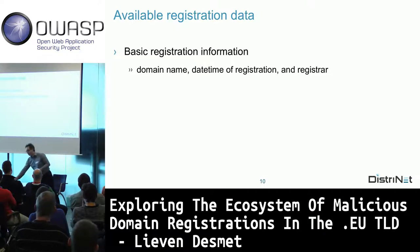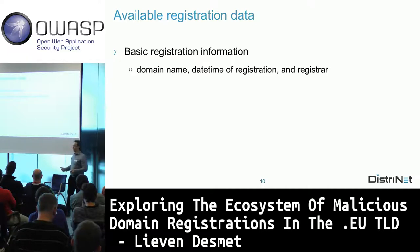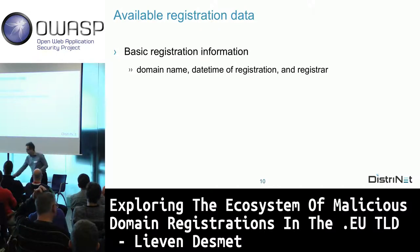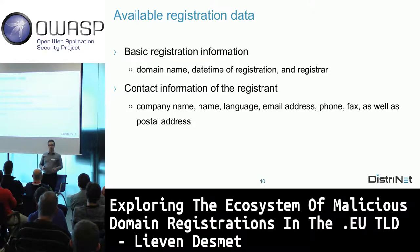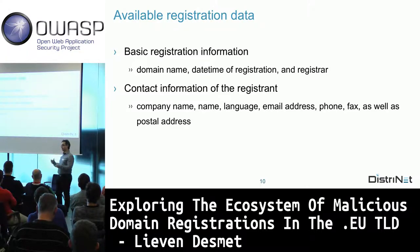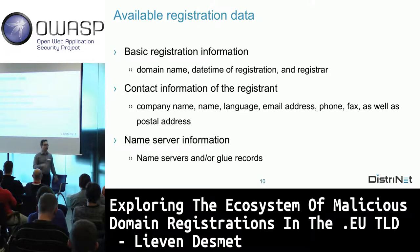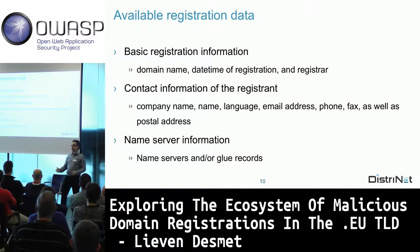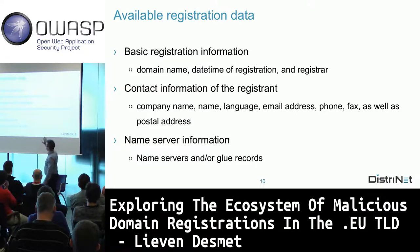The available information includes basic domain name data, which registrar was used, and registrant contact information: company name, name, language used, email address, phone, and even a postal address. To register in the .eu TLD you must provide correct contact information. We also have technical details: nameserver information and glue records—IP addresses that bootstrap nameserver lookups. This is all information available through our collaboration with ERIT.